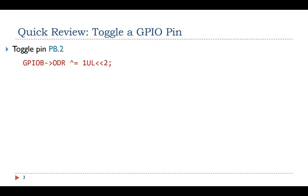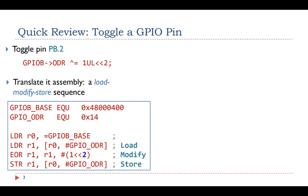Let's do a quick review on how software toggles a GPIO output. In a C program, we can toggle an output by performing an exclusive OR operation with the bit mask. This simple C statement is not an atomic operation, which means it cannot complete in a single step — it takes multiple instructions to complete. If we translate it into assembly, it involves at least three operations: load, modify, and store.